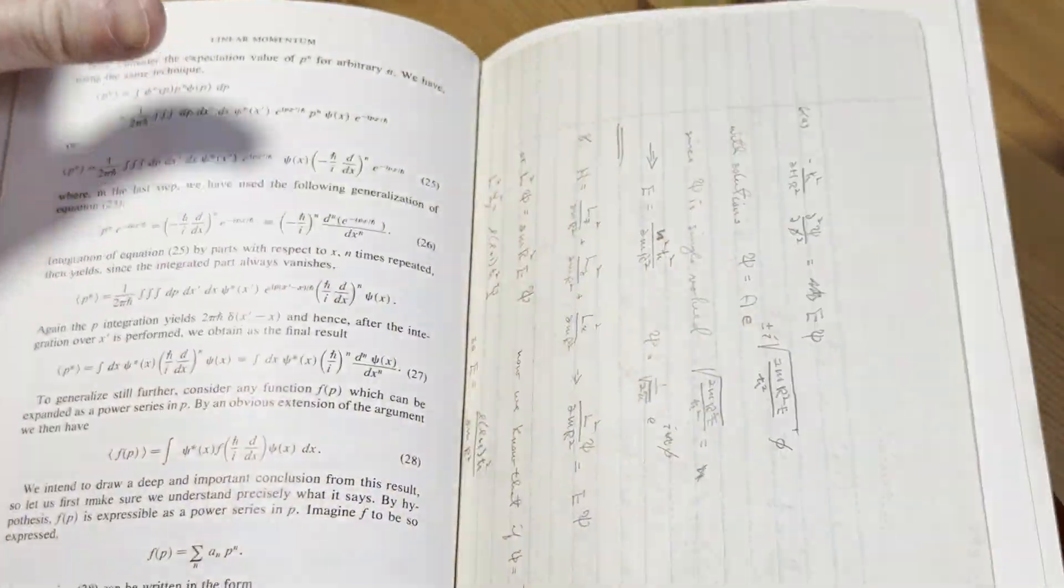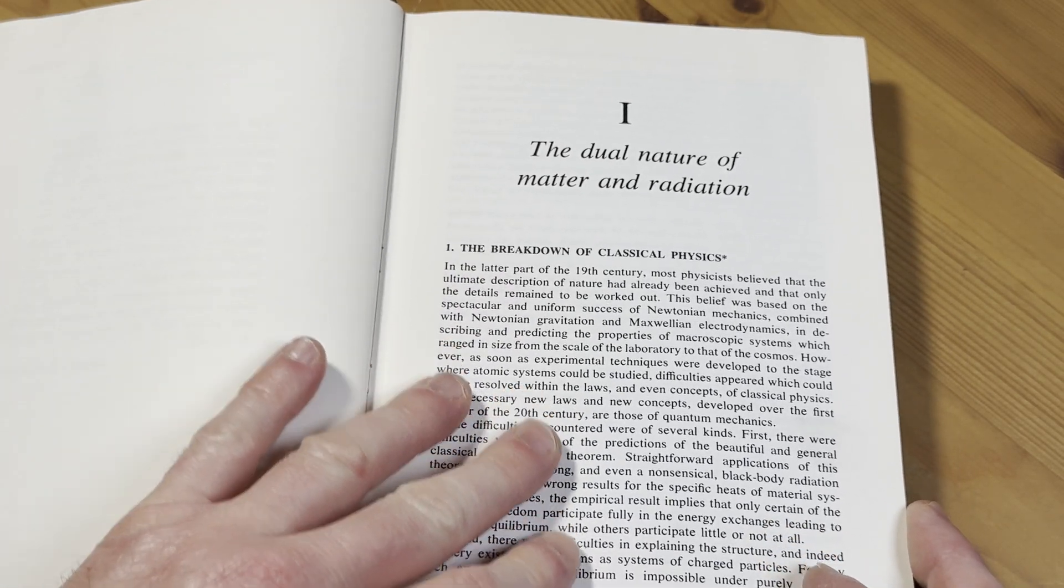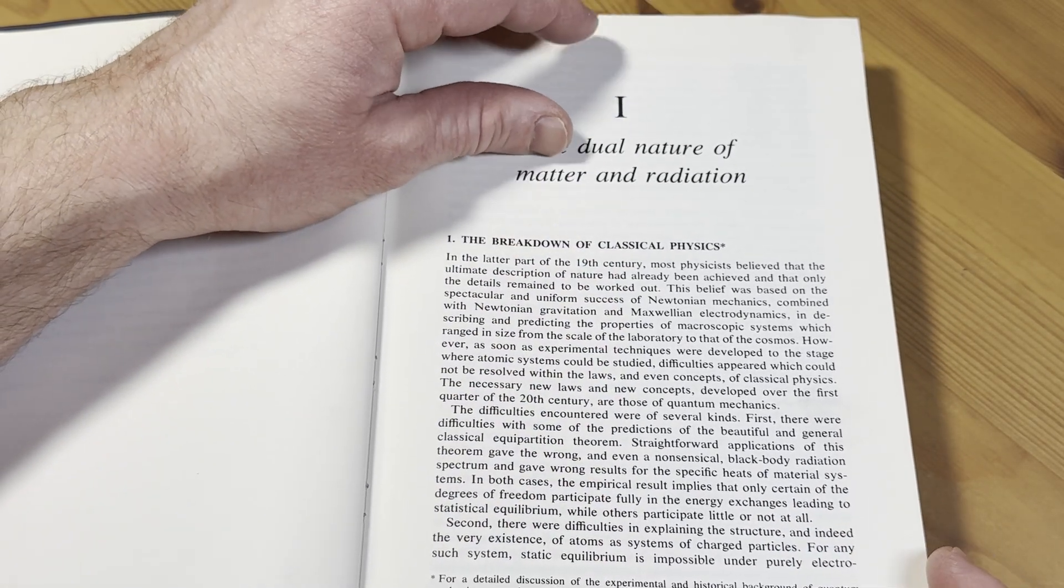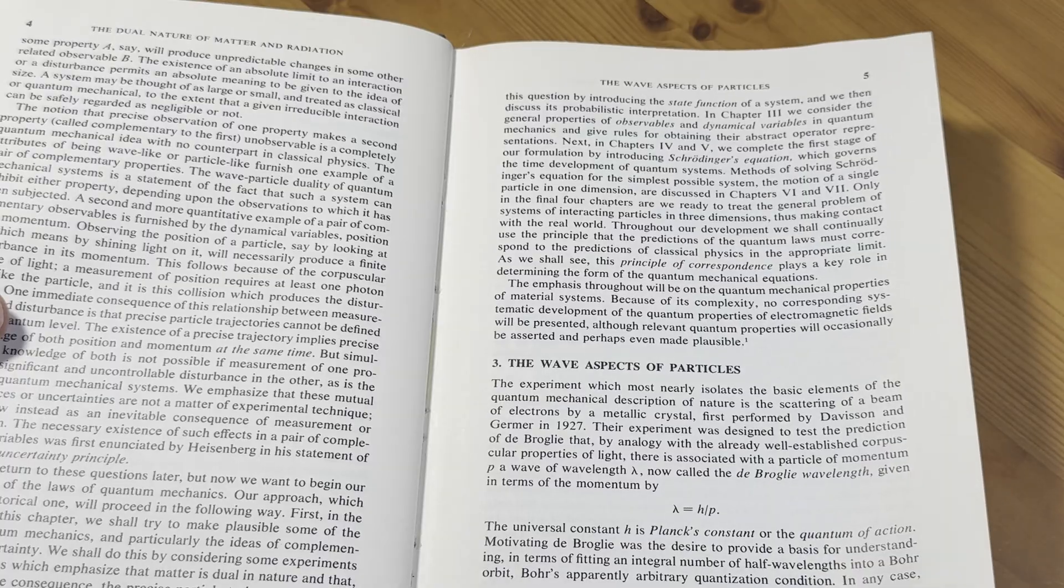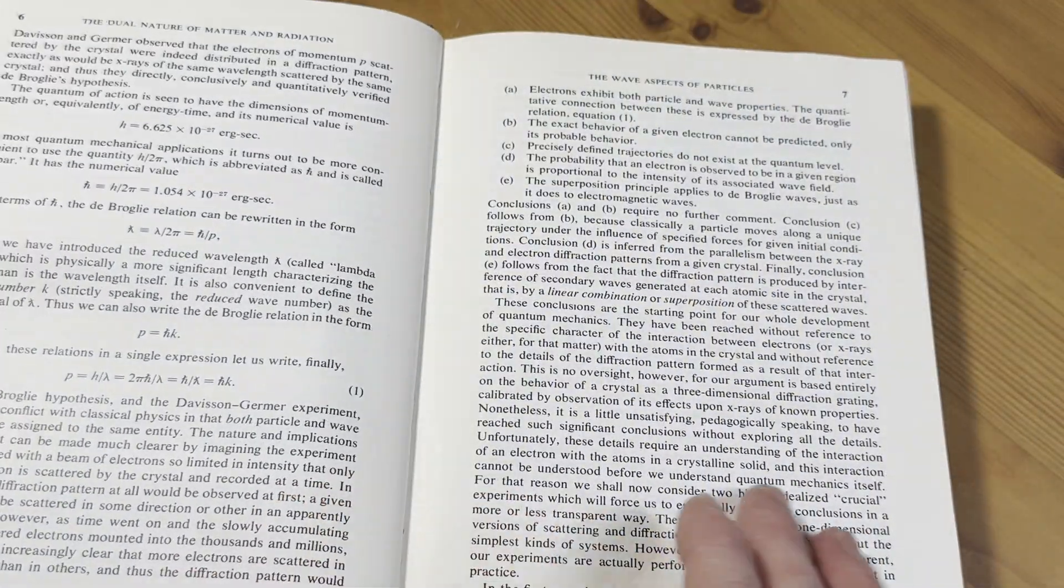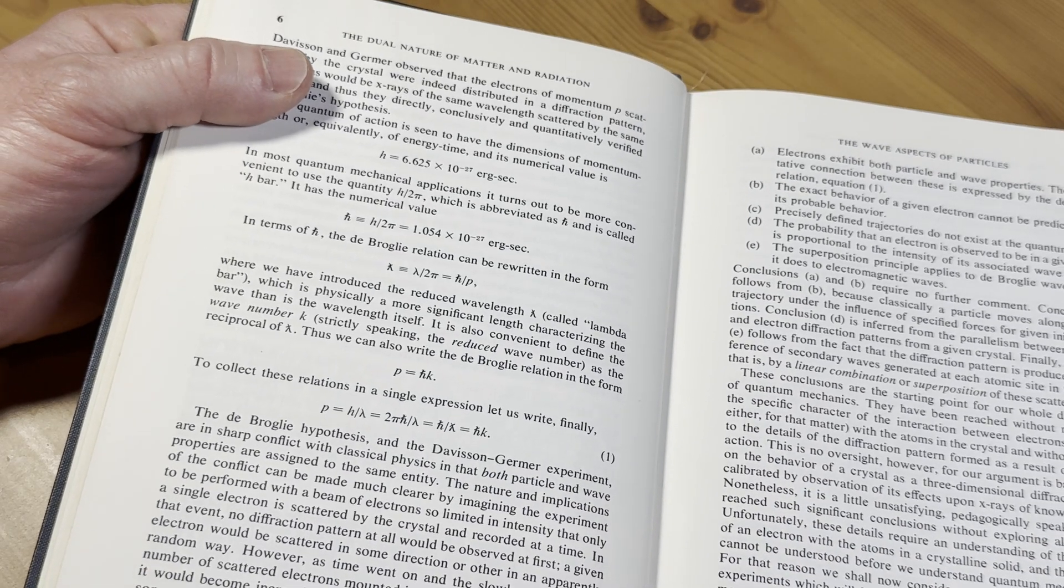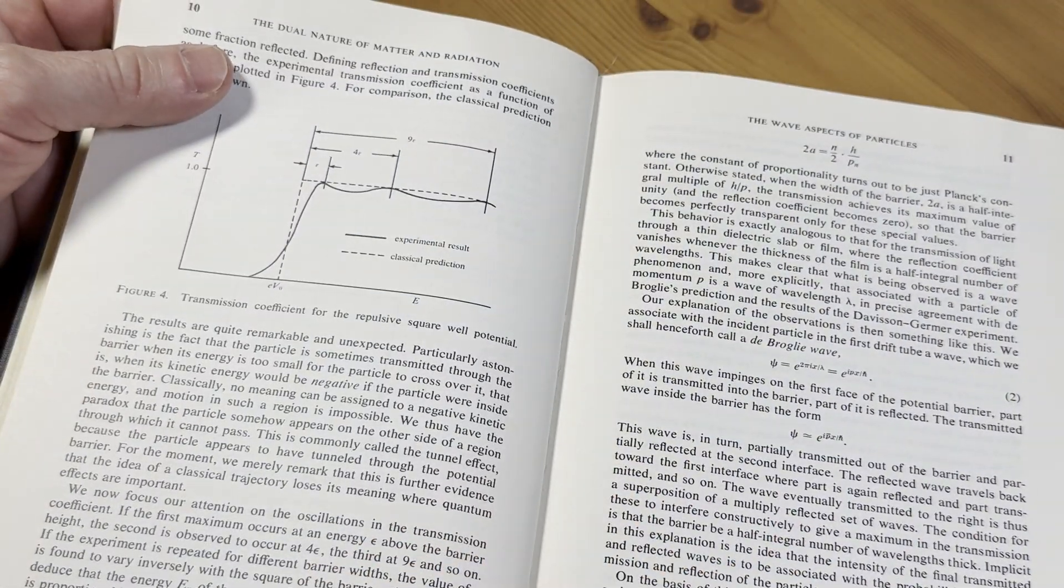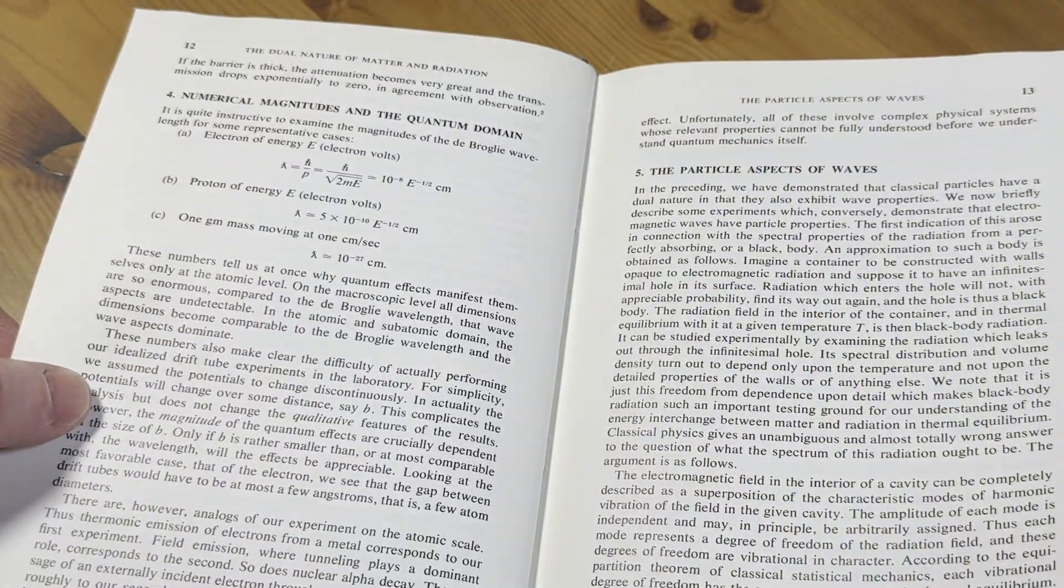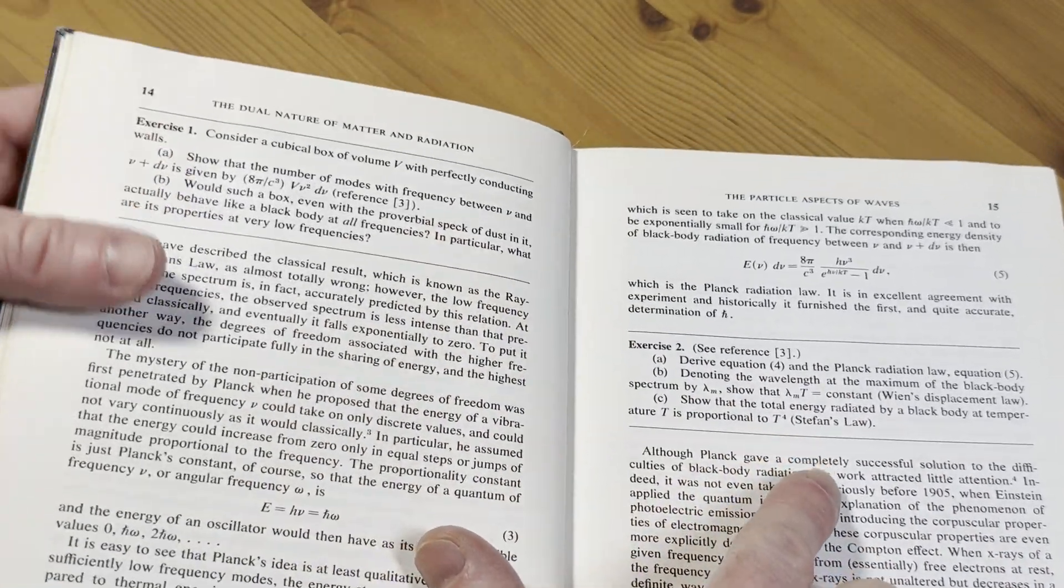Let's go to the very beginning so you see how it starts. The dual nature of matter and radiation. So, you know, you read through it. More reading. Quantum mechanical concepts. The wave aspects of particles. Some math here. More diagrams. So, let's get to the exercises. There's quite a bit here. And here's exercise two. Exercise one, exercise two. So, you have some exercises.